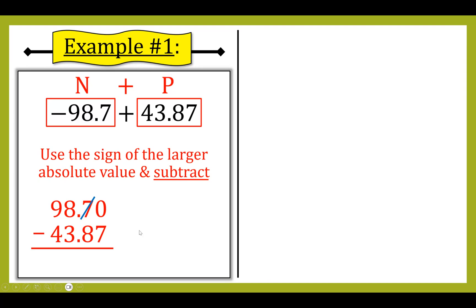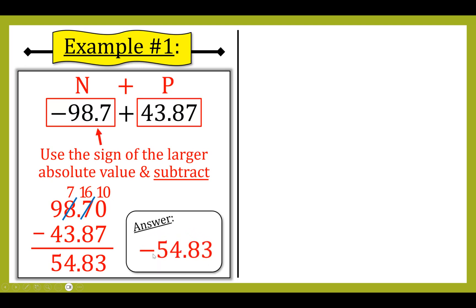Now I subtract right to left. I can't do zero minus seven, so I borrow — this becomes six, and now ten minus seven is three. I can't do six minus eight, so I borrow again — this becomes seven, and sixteen minus eight is eight. Seven minus three is four, and nine minus four is five. I bring down my decimal. The sign of the larger absolute value is negative, so my answer is negative 54.83.